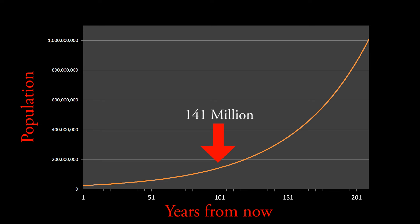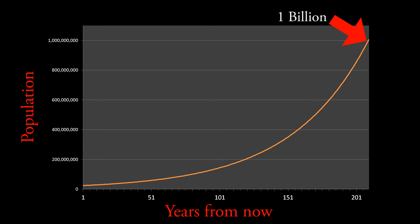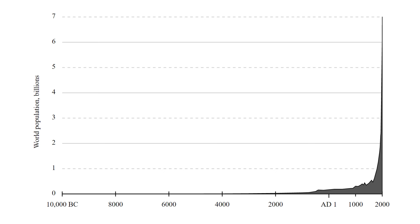If this growth continues at the same rate for another century, our population will be 141 million, and if it continues the same for another century after that, it'll be 842 million. We then tick over a billion 10 years later. That may or may not actually happen to Australia, but if you're skeptical that this can happen to human populations over long periods of time, here's a graph of the human population since 10,000 BC.